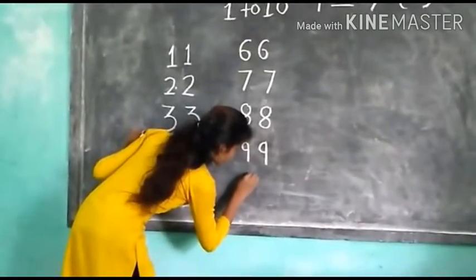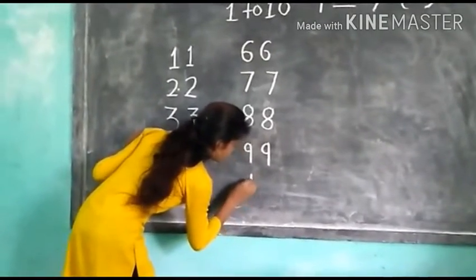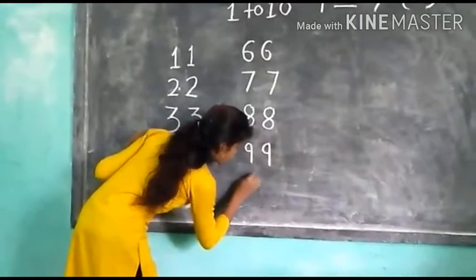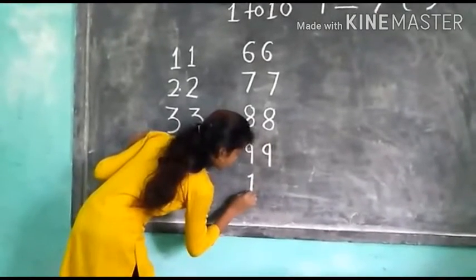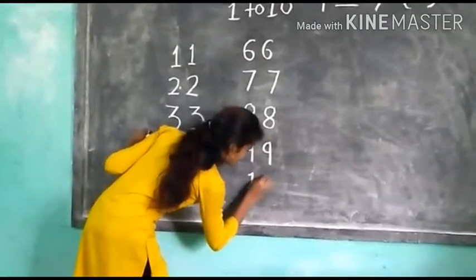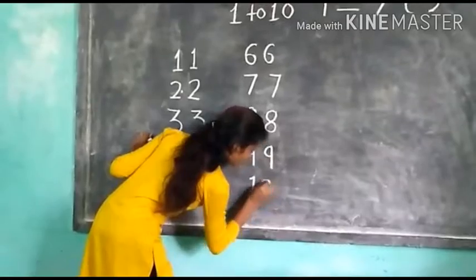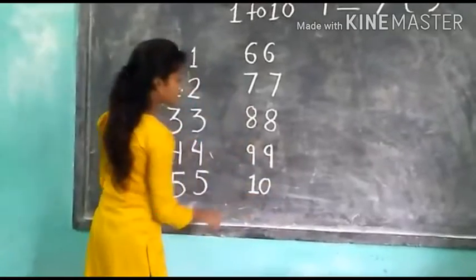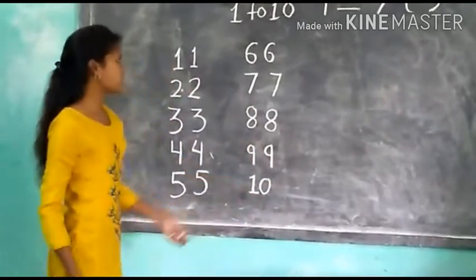Next number is 10. Standing line, sliding line, sleeping line, then 0. 10.